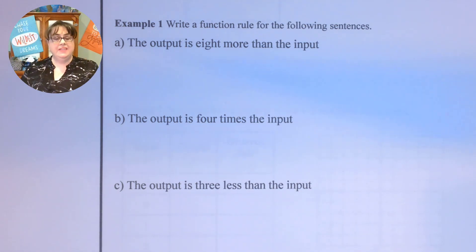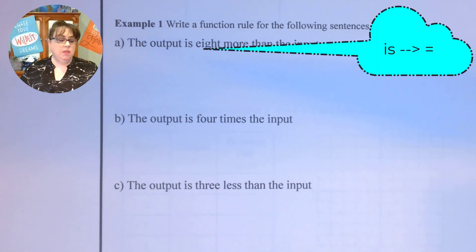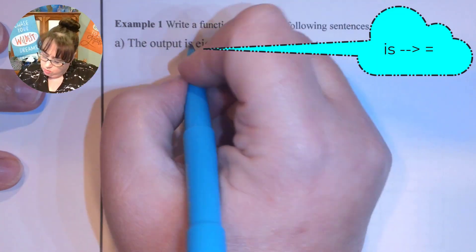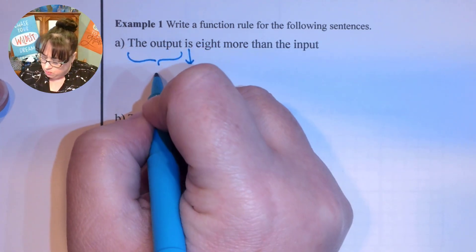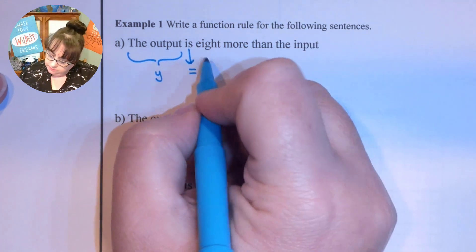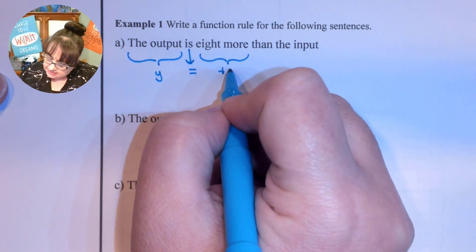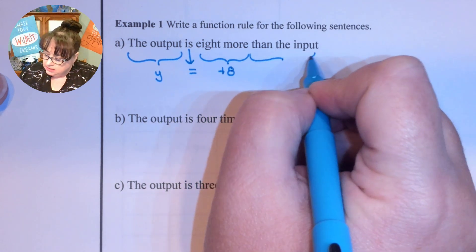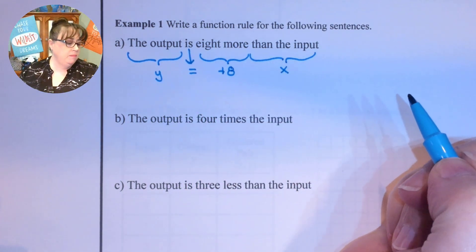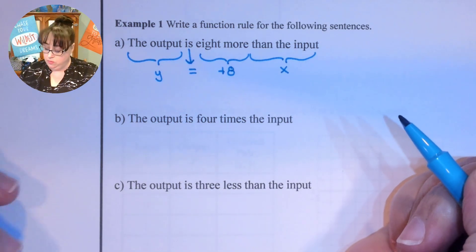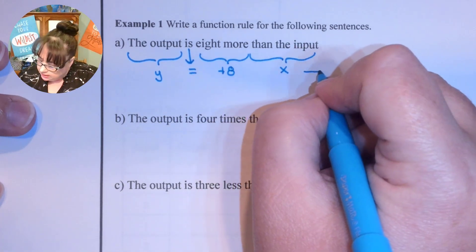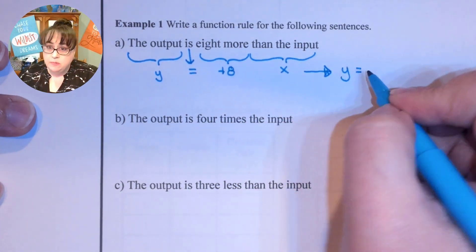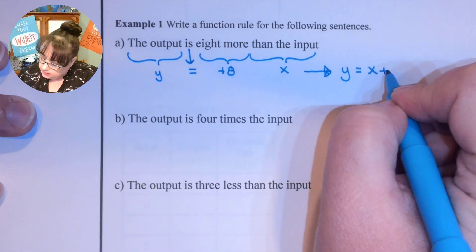An output is 8 more than the input. One of the things we want to focus on is remembering that the word 'is' is your equal sign. When we say 'output' we represent that with y, and when we say '8 more' that is the plus 8, and then the input is x. So we say y equals x plus 8.